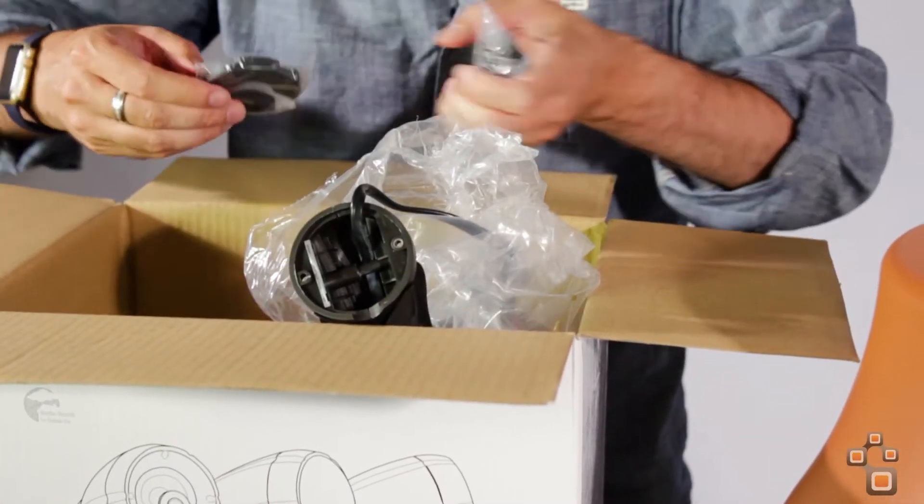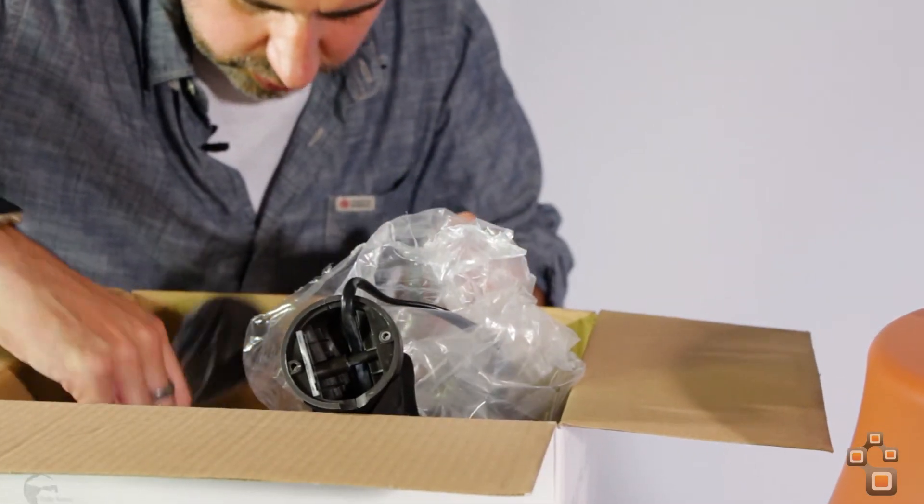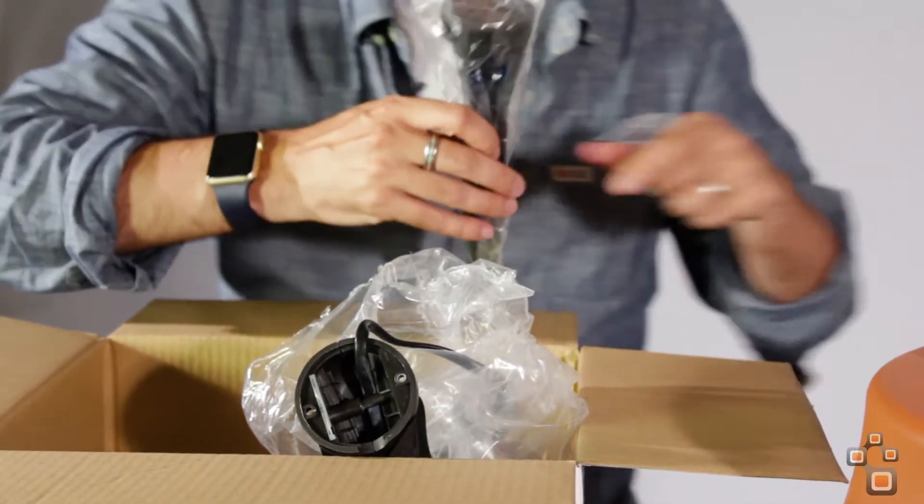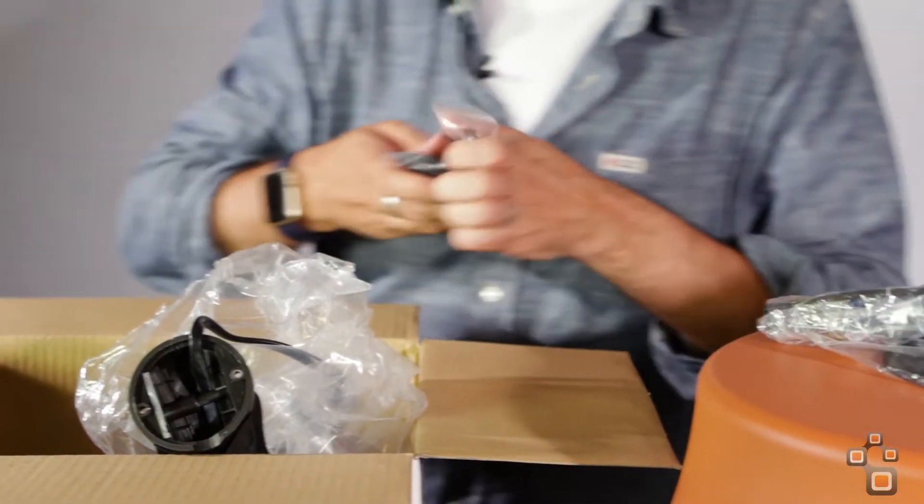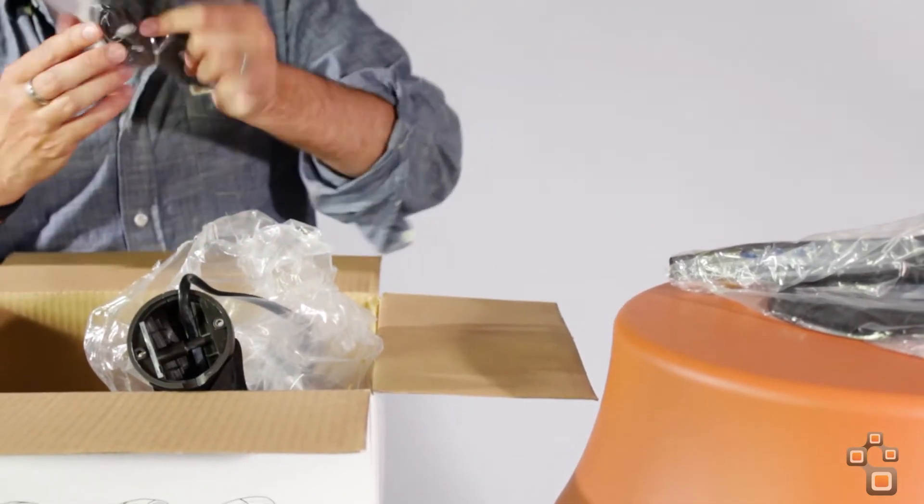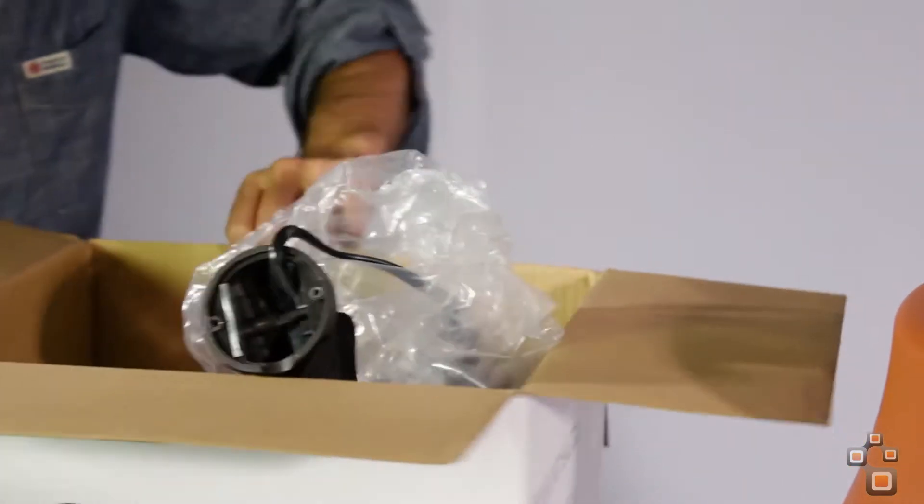So here's some of the other fixing options. So it comes with the stake for putting it into the ground, which will fit in there. And these are the bits here as well. So this is the alternative bracket for the mounting. Let's have a look at that. Let's get all these bits out.